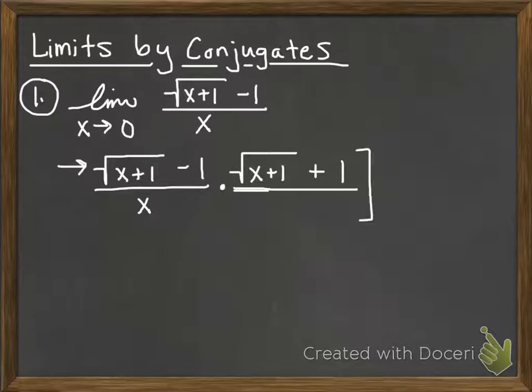In order to make this fraction to not affect the integrity of this problem, I have to make this a one, which means I have to divide this by itself. And now, I haven't changed anything. The only thing I've changed is the way that this looks. At this point in time, we have to multiply. And this is where you've got to be really careful.